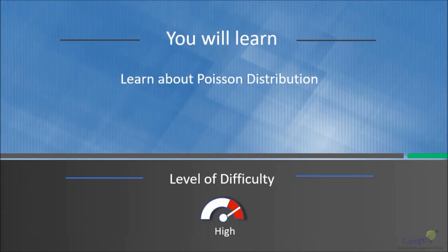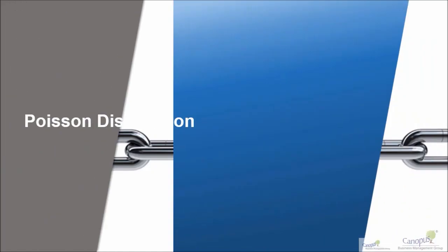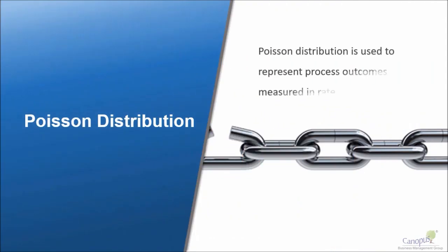In this lecture we will learn about Poisson distribution. A Poisson distribution is a discrete distribution which is used to represent process outcomes which are measured in rates.